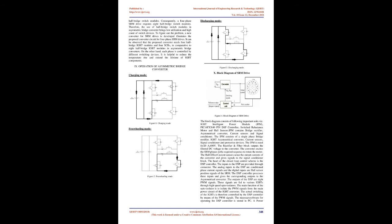Design of Asymmetric Bridge Converter: Half-bridge IGBT modules are the popular choice to build asymmetric bridge converters and many other converters in industrial applications, instead of discrete IGBT modules. Because the diodes for freewheeling are necessary even though there are built-in diodes in the discrete IGBT modules, it makes the circuit less trustworthy and more complicated. Each phase branch needs two half-bridge switch modules. Consequently, a four-phase SRM drive requires eight half-bridge switch modules. Therefore, the use of half-bridge switch modules in asymmetric bridge converter brings low utilization and high count of switch devices.